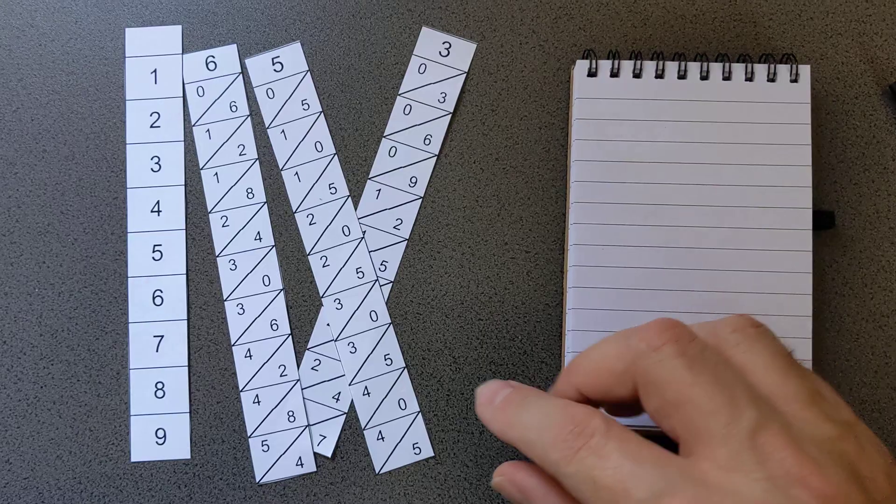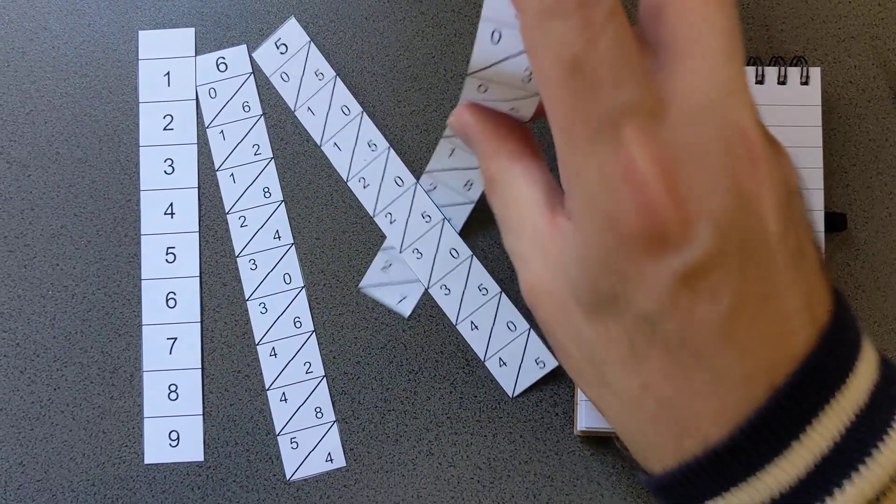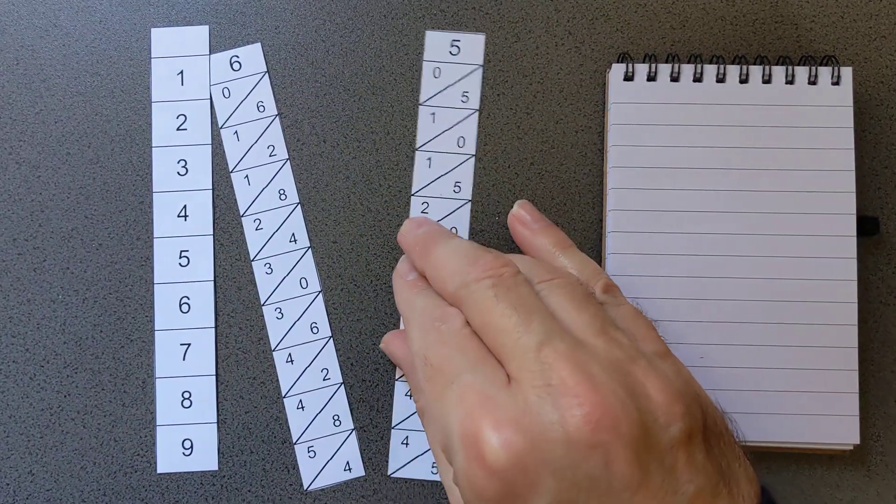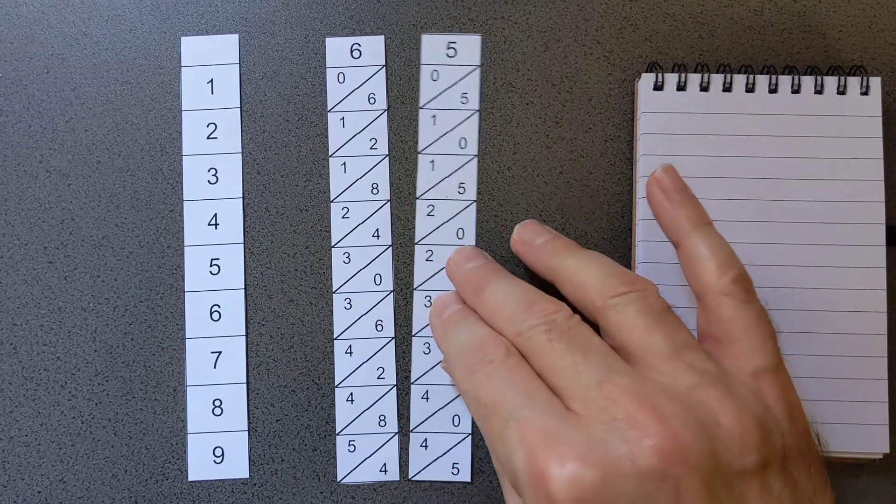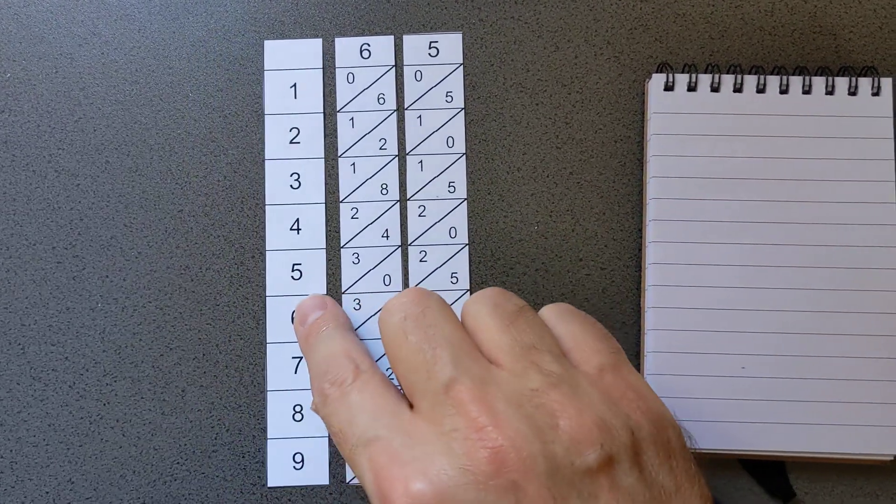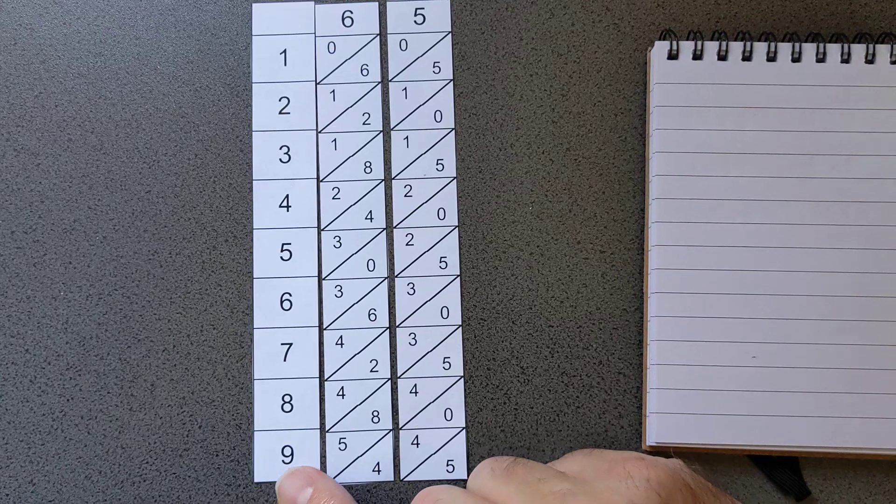To represent the digits that you wanted to multiply, if you wanted to multiply, say, 65 by a particular number, you'd get the ones with 6 and 5 at the top, and you'd have an extra one just to number the rows for you.